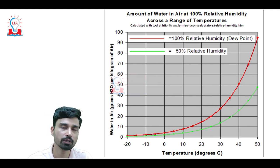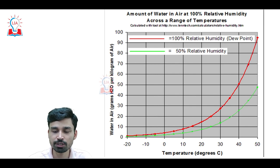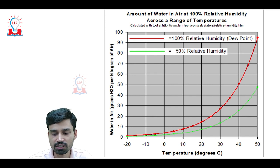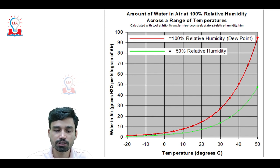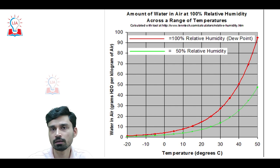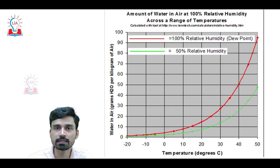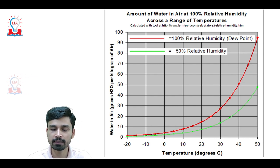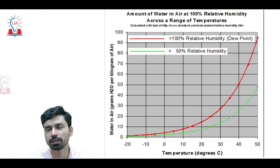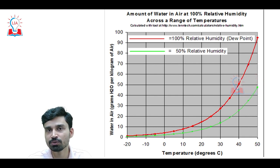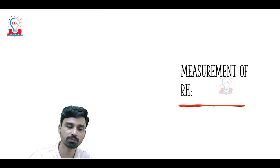Looking at this particular diagram, between minus 20 to plus 20 degrees Celsius we have an overall temperature change of 40 degrees, but RH increases by only about 10 units. But between 20 to 40 degrees Celsius, RH increases by almost 30 units. So overall, RH is not directly proportional to temperature change, but as temperature becomes higher, the rate at which RH changes with temperature is much greater.